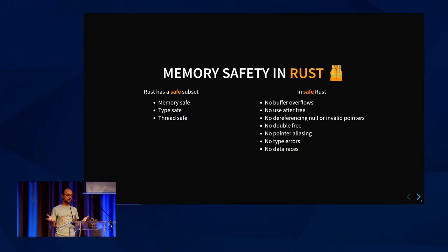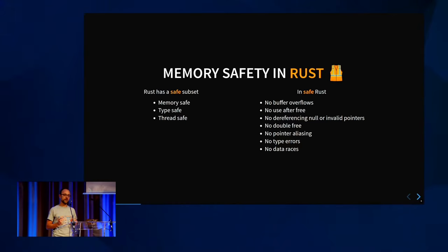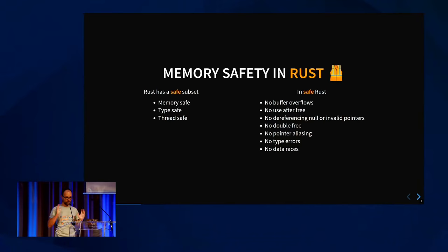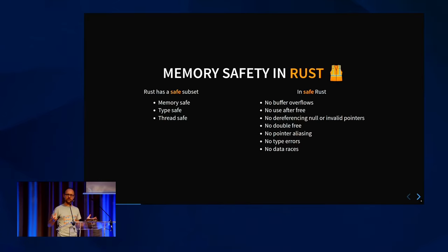Specifically for what memory safety means in Rust: the full Rust language is not memory safe, but we have a safe subset of the language. The safety we get includes absence of type confusions, absence of race conditions, absence of use-after-free, buffer overflows, and all those kinds of errors. This isn't just something we think — there's a paper called RustBelt where researchers did a formal proof of this. They proved it with math.